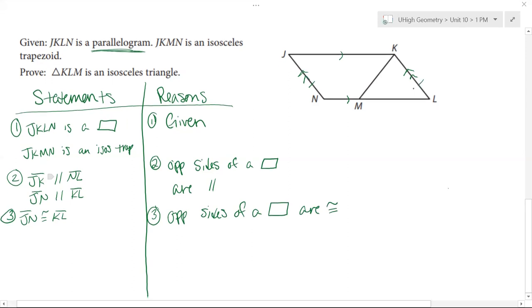So now I know my opposite sides are congruent. I'm getting close. I know something about triangle KLM. I also know step four, since JKMN is an isosceles trapezoid, and JK and NM are my bases, I know that JN is going to be congruent to KM. And my reason is going to be that the legs of an isosceles trapezoid are congruent.